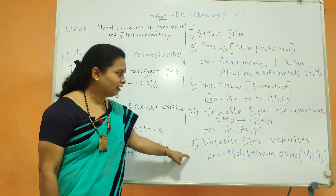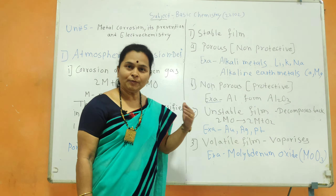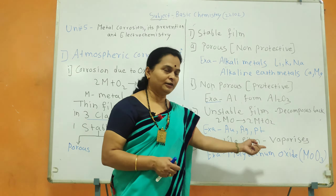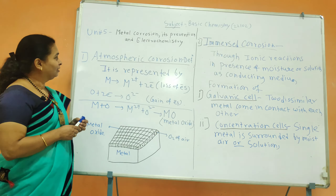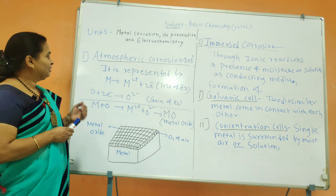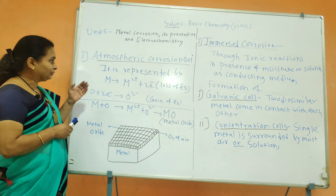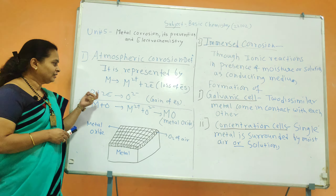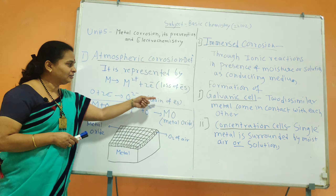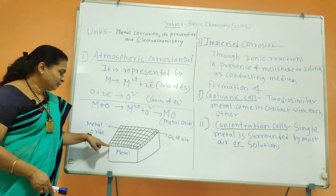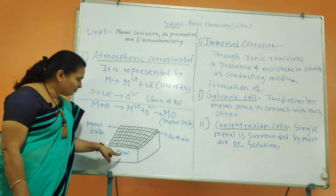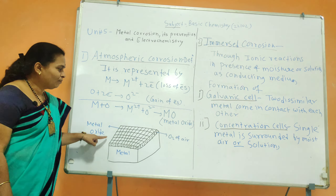The third type of film is volatile film. This volatile film vaporizes as soon as it is formed, and the only example is molybdenum oxide. The mechanism of atmospheric corrosion is represented by the reaction: metal loses electrons to form a cation, then oxygen accepts electrons to form an anion — that is, gain of electron to form metal oxide. In the diagram, oxygen from air comes in contact with the metal plate and there is formation of metal oxide.